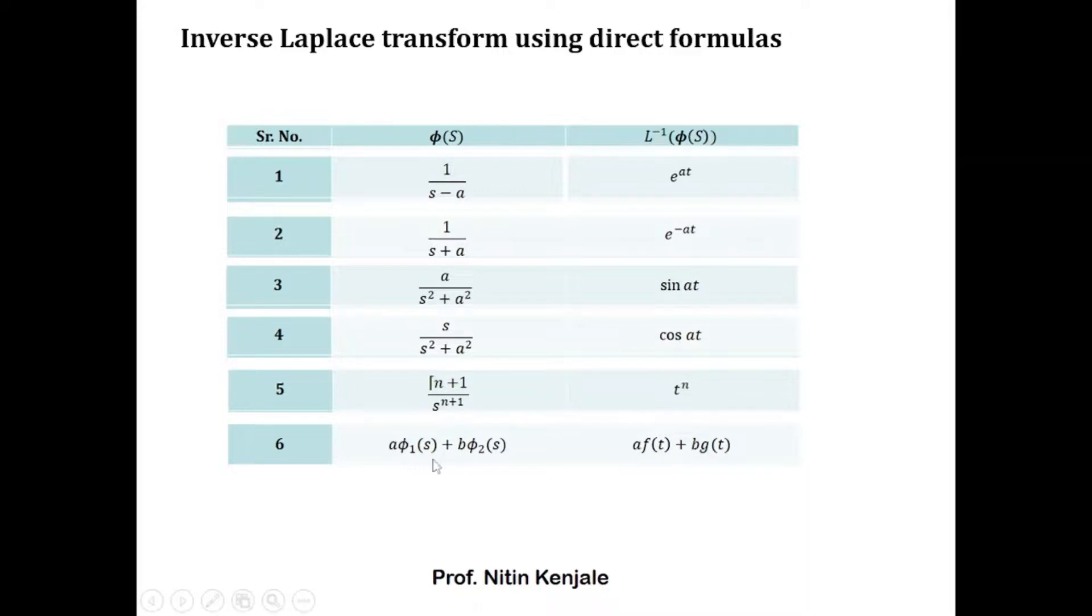is given by a·f(t) + b·g(t), whenever f(t) = L⁻¹{φ₁(s)} and g(t) = L⁻¹{φ₂(s)}. Here we have used the linearity property.